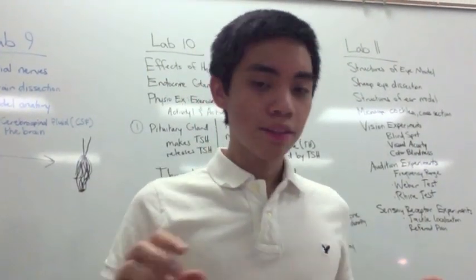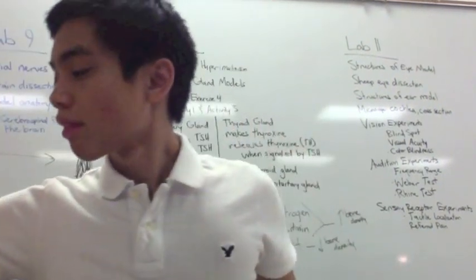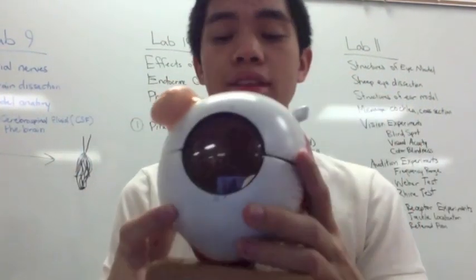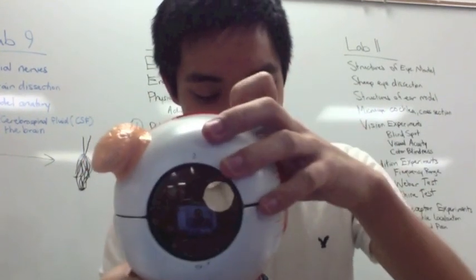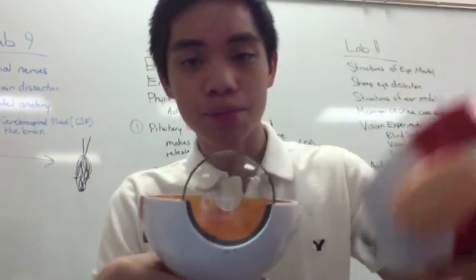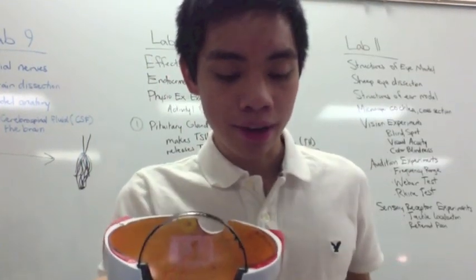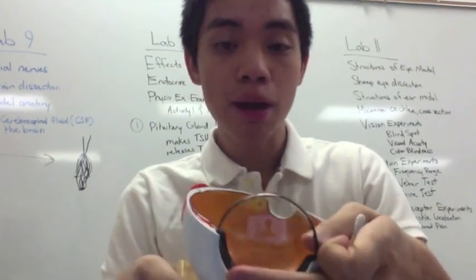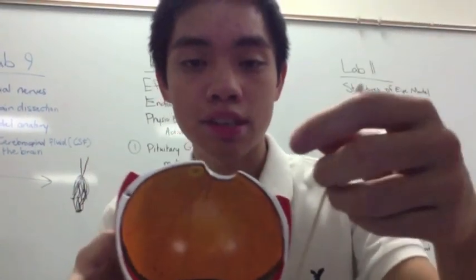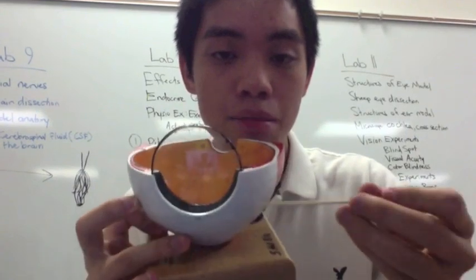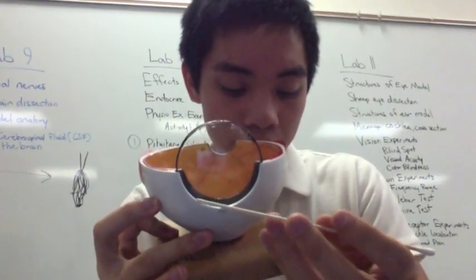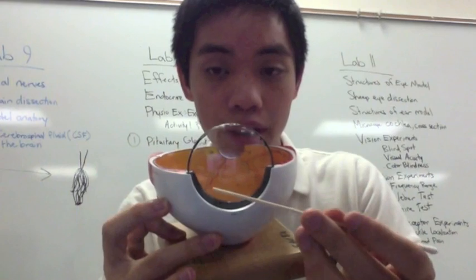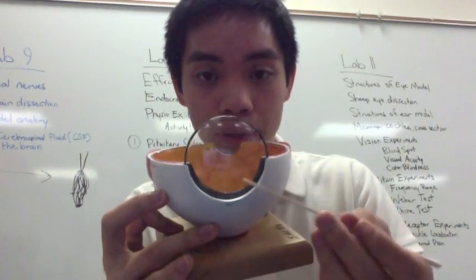Next we have the eye. We have the fibrous layer, which is the outer layer of the eye. We have the sclera, which is the white part, and we have the cornea, which is this clear part right here.